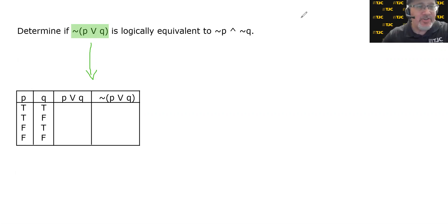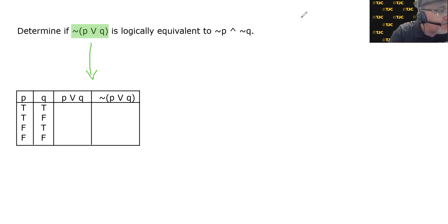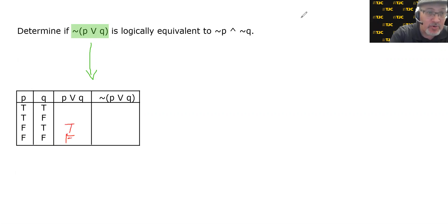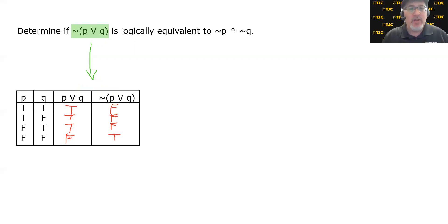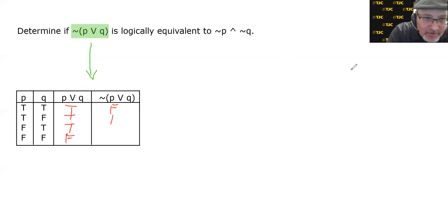The last row is the only row where the disjunction is false; otherwise it's true. Then the negation just flips the truth values: false, false, false, true. The font size inside the truth table is a bit small, but the final column reads: false, false, false, true.